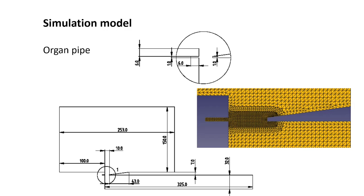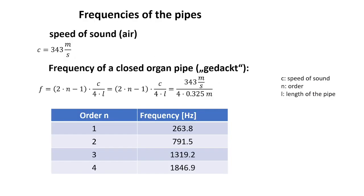We will simulate the air coming in from the channel on the left side, with a thickness of 1 millimeter for a good mesh. There is also a surrounding area with a width of 253 millimeters and a height of 150 millimeters. We will use a closed pipe (in German: 'gedackt') to get a lower frequency. The frequency for a closed organ pipe depends on length and speed of sound — at 343 m/s, the first-order frequency is expected to be 263.8 Hz.